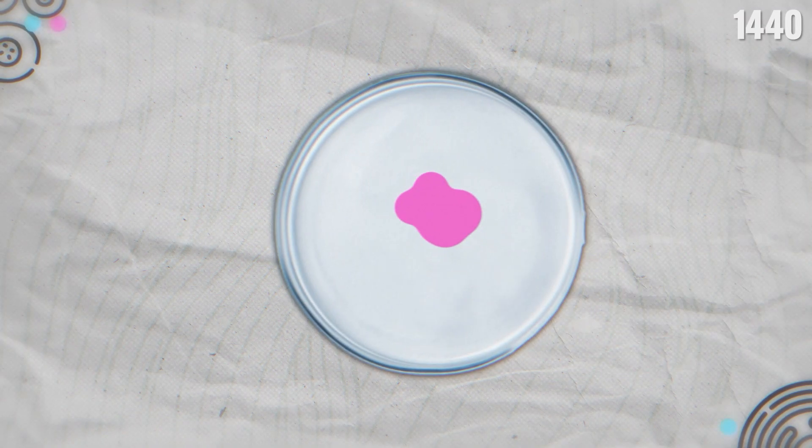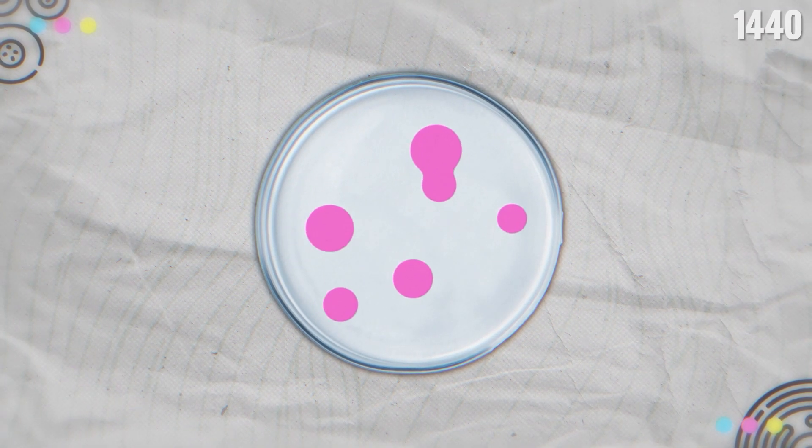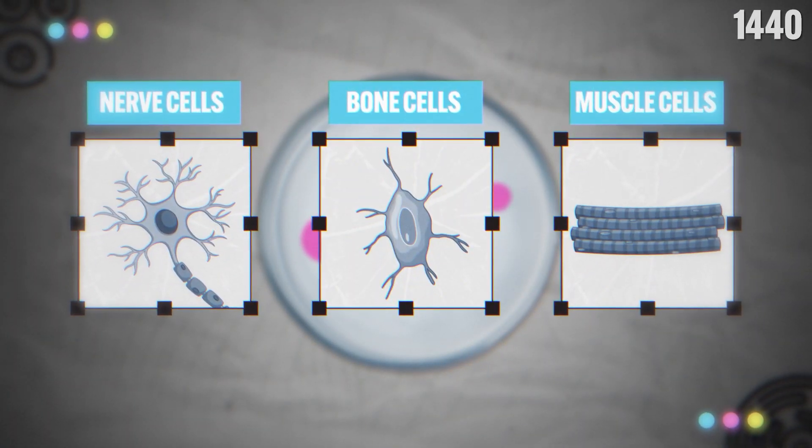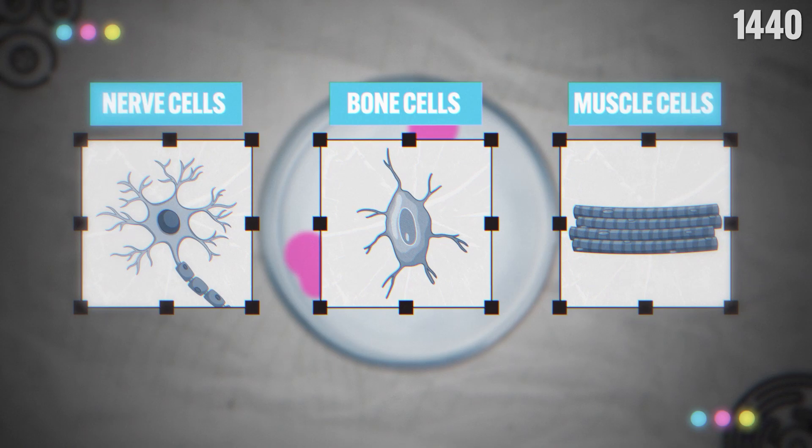Stem cells are unique because they can create copies of themselves and produce other types of cells such as nerve, bone, or muscle cells, which cannot easily replicate on their own, if at all.